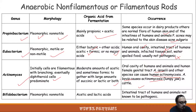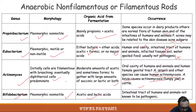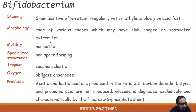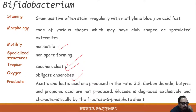Actinomyces genus: initial cells are filamentous with branching, and eventually diphtheroid cells predominate. A moderate amount of acetic and formic acids, together with large amounts of succinate and lactic acid, are produced. They are found in the oral cavity of humans and animals and the human female genital tract. Actinomyces israelii and other species can cause human actinomycosis. Actinomyces bovis causes actinomycosis — lumpy jaw — in cattle.